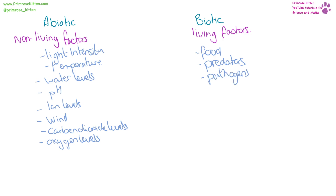An increase, reduction, removal, or introduction of any of these factors can have a dramatic impact on a community. For example, the introduction of a new predator or a new pathogen could wipe out a community. An increase or decrease in temperature could mean that an organism's food source is gone, or an organism can't survive in that environment. And plants and animals aren't going to be able to survive without sufficient levels of carbon dioxide and oxygen.